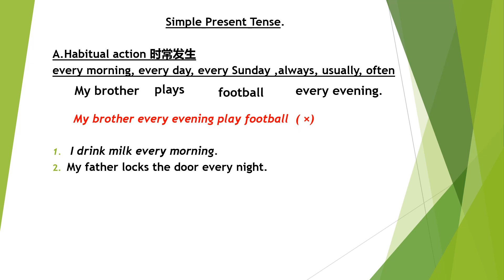Sentence two: 'My father locks the door every night.' The subject is 'my father', the verb is 'lock'. Write the subject, then the verb, then the object (the door), then the time (every night). Sentence three: 'They buy apples every day.' For habitual action, decide — buy or buys? Write your subject first.